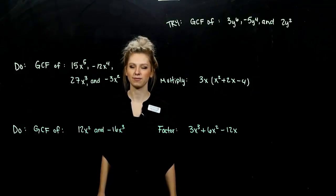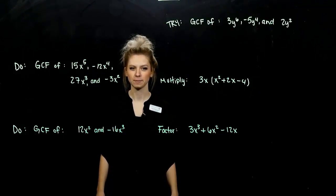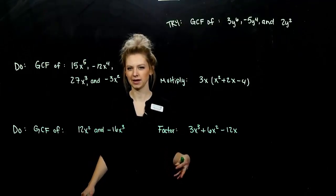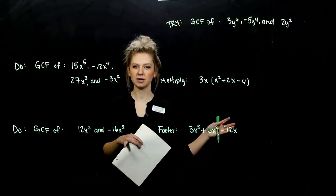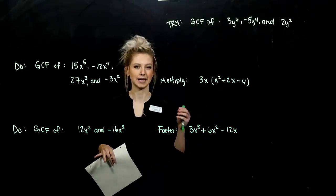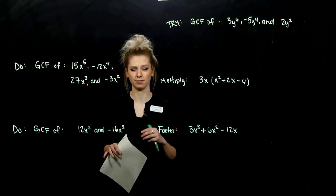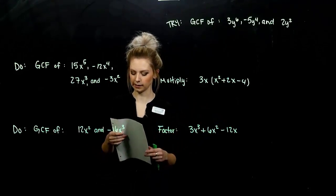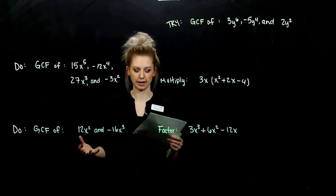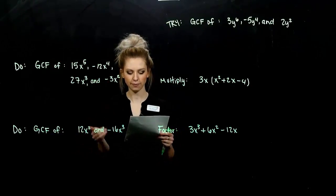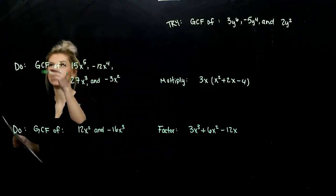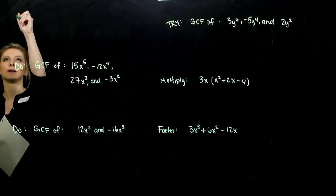Chapter five starts us off with factoring. In the first section, we look at the most basic case: is there anything common between my polynomial terms that I can take out of everything? Before we get there, we want to talk about what it means to factor something. To factor a polynomial is to express it as a product.